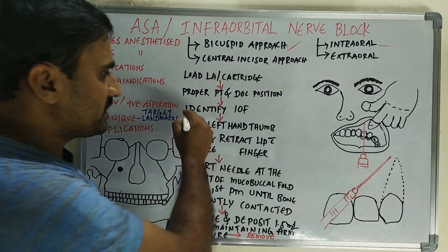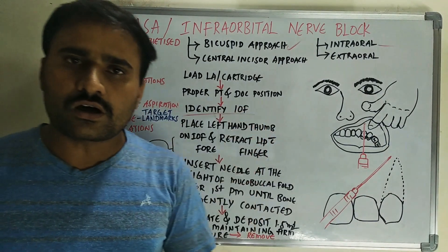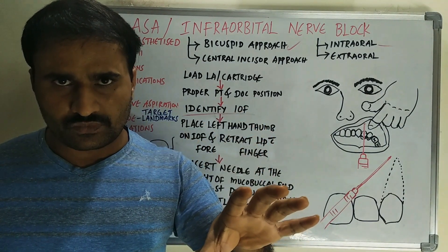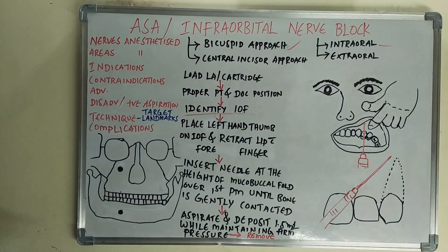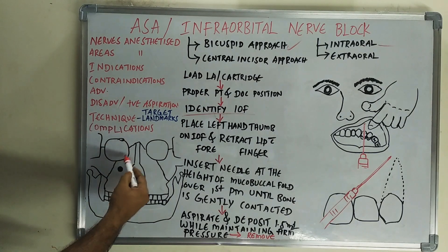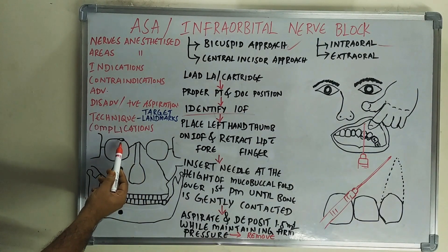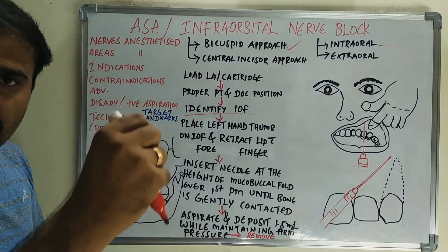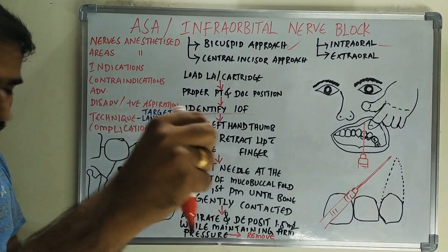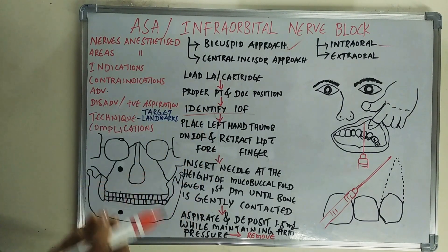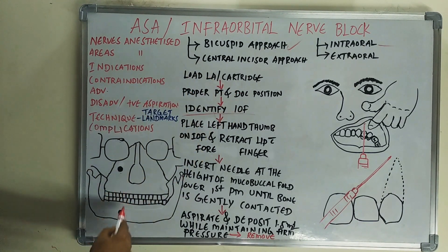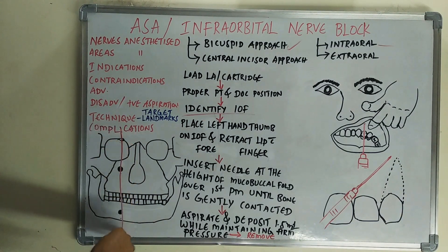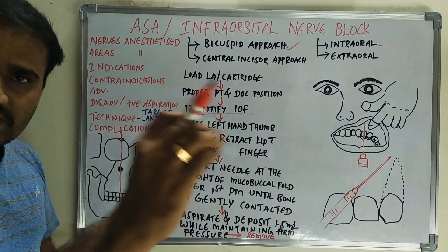The most important step is identifying the infraorbital foramen. For anatomical reference, in the skull you can see the supraorbital notch, from which supratrochlear or supraorbital nerves originate. The supraorbital notch, infraorbital foramen, and mental foramen all lie on almost a straight vertical line.